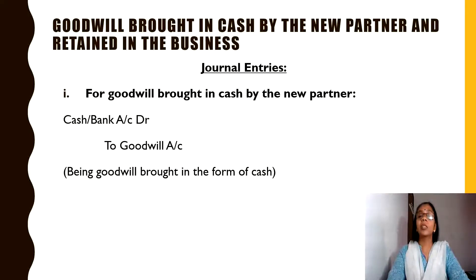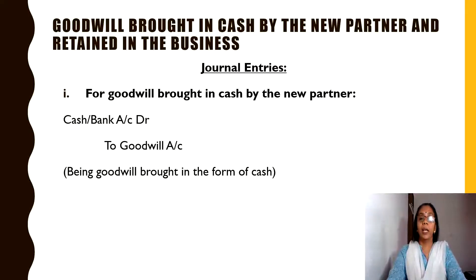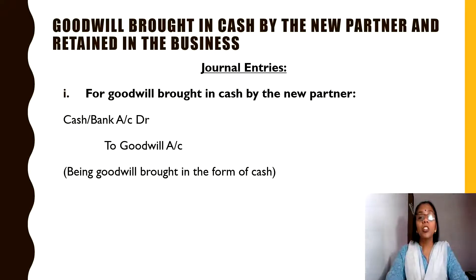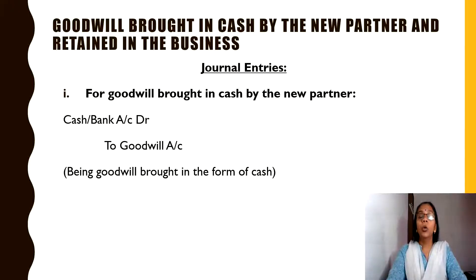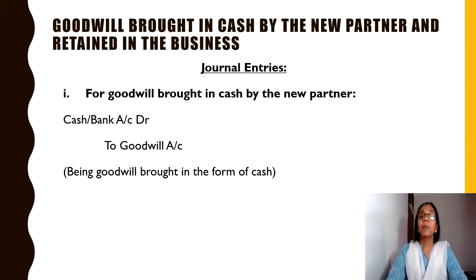As we proceed, the first situation stands like this: goodwill brought in cash by the new partner and to be retained in the business. Goodwill brought in cash means when cash comes into the business in the form of goodwill, goodwill being an asset is being given by the new partner. Naturally, the journal entry to be drafted would be: cash or bank account debited to goodwill account, because the new partner is the giver of the benefit. The journal entry reads: Cash or Bank Account Dr. to Goodwill Account — being the goodwill brought in the form of cash.